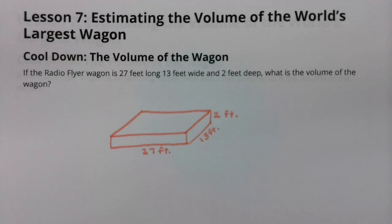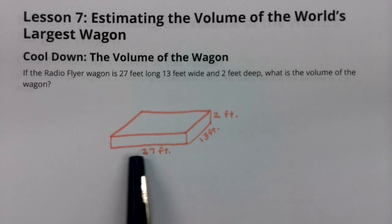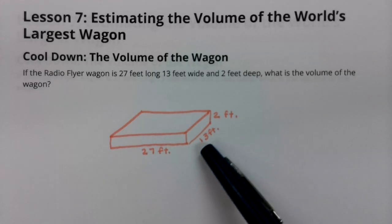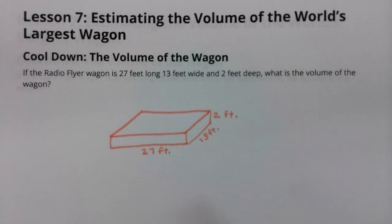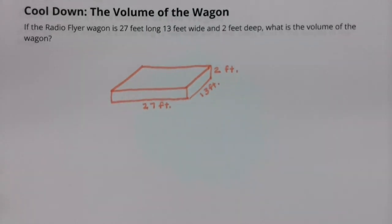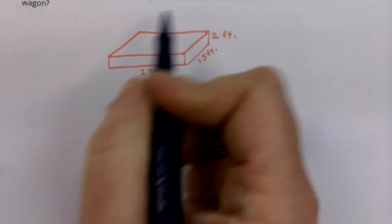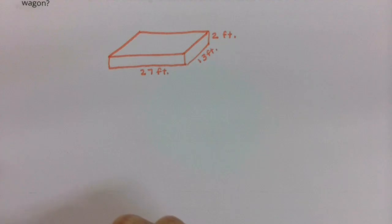If a radio flyer wagon is 27 feet long, 13 feet wide, and 2 feet deep, what is the volume of the wagon? When in doubt, draw it out, and that's a great idea to sketch a little picture of what this rectangular prism wagon would look like.